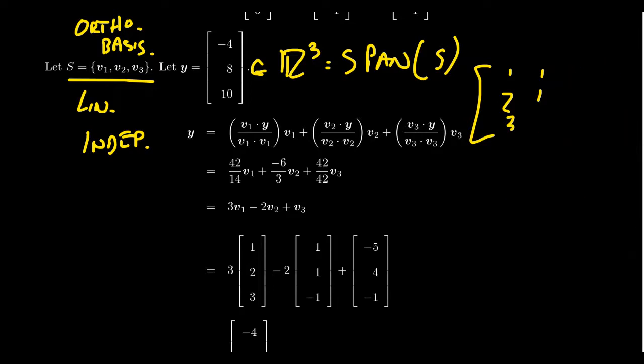What I want to argue now is that I can actually compute this using the inner product. That is Fourier's coefficients. So, what would that look like? So, we're supposed to take the inner product of V1 dot Y divided by V1 dot V1 and times that by V1.